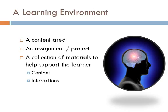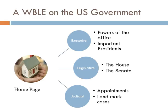So what might one of these things look like? Let's take the content area of the U.S. government. In a learning environment on the U.S. government you would start with a home page or a launching page, and there's a natural breakdown of how this content is going to be organized. In the United States government we have three branches: the executive, legislative, and judicial.